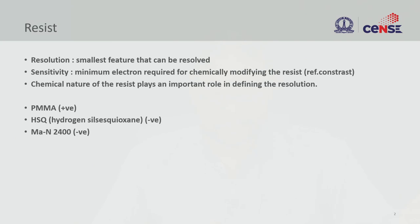There are primary requirements which we already saw earlier in optical lithography as well. Resolution — we need a very small feature, the smallest is what we prefer — and the sensitivity of the resist is also very important. You want a minimum amount of electrons in order to create the chemical modification, in this case the solubility change; you do not want to spend too much energy, so the resist should be sensitive. The chemical nature of the resist also plays an important role, because it is not just exposure — after exposure you are going to develop the resist. A long-chain resist will have lower resolution compared to a short-chain resist.